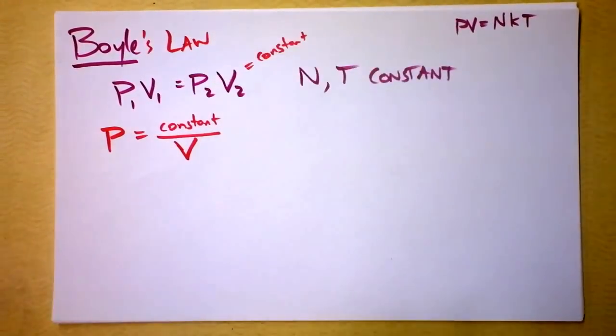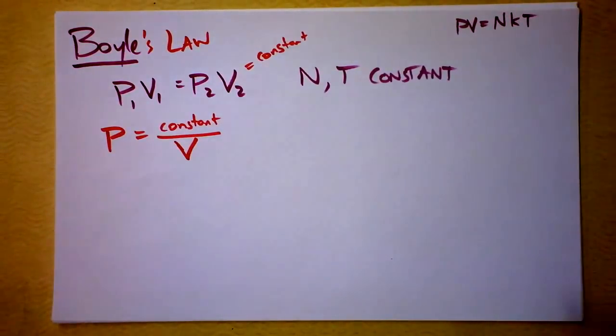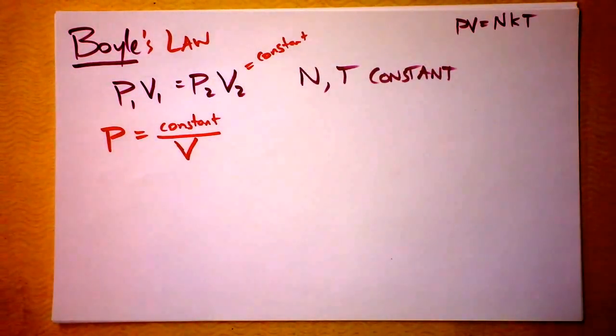So that's called Boyle's Law. That's called Boyle's Law, and that was the first step towards getting to PV is NRT, or PV is NKT.